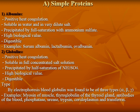By electrophoresis, blood globulins are found to be three types: alpha, beta, and gamma globulin. Examples include myosin of muscle, thyroglobulin of the thyroid gland, antibodies of the blood, phosphatase enzyme, urease, trypsin, ceruloplasmin, and transferrin.